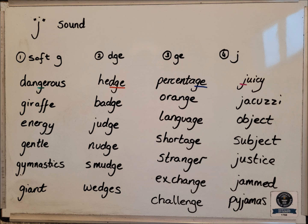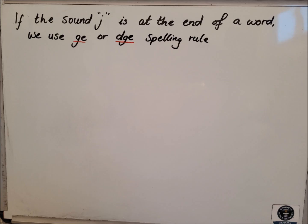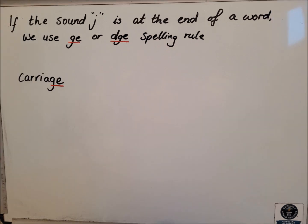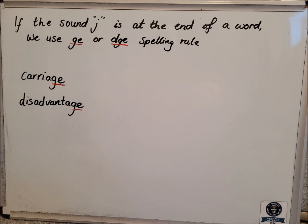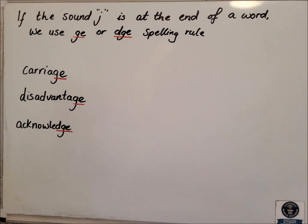Before we have a look at our spelling list for this week, there is one rule I would like to quickly go over. If you hear the J sound at the end of a word, the spelling is either going to be the GE or the DGE spelling rule. In English we don't use J at the end of a word. For example, 'carriage' has GE at the end, 'disadvantage' again has GE at the end, and 'acknowledge' has DGE at the end. So if you hear that sound at the end, it is going to be one of those two spelling rules — always useful to keep in mind.